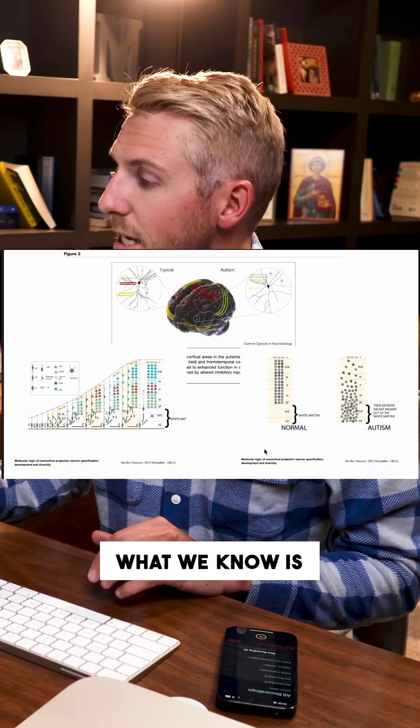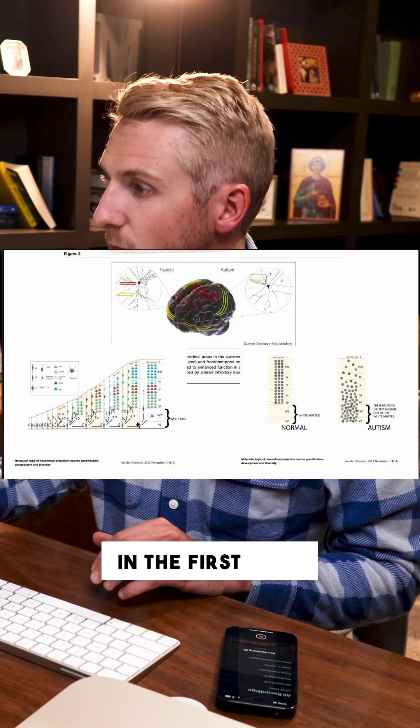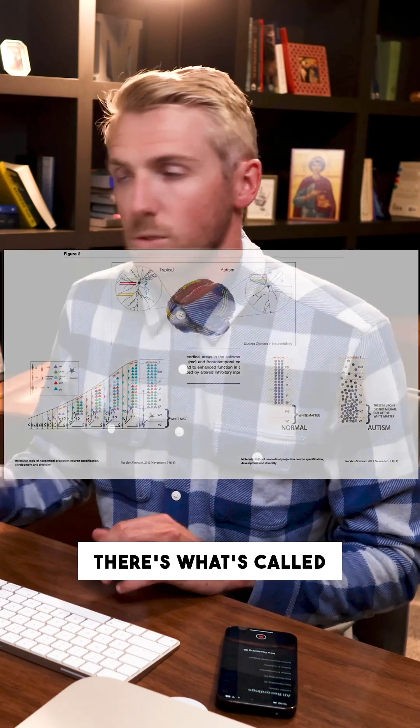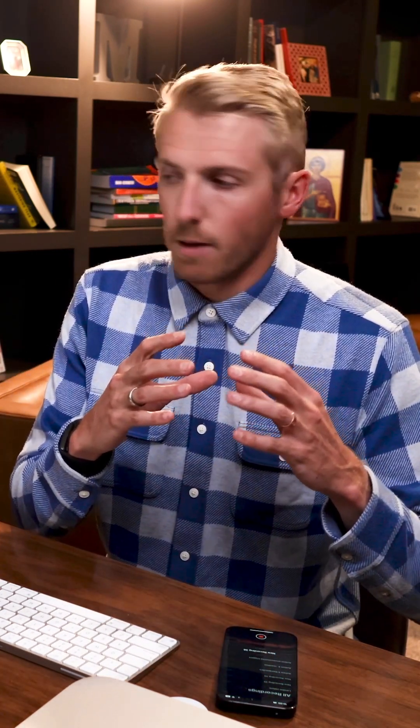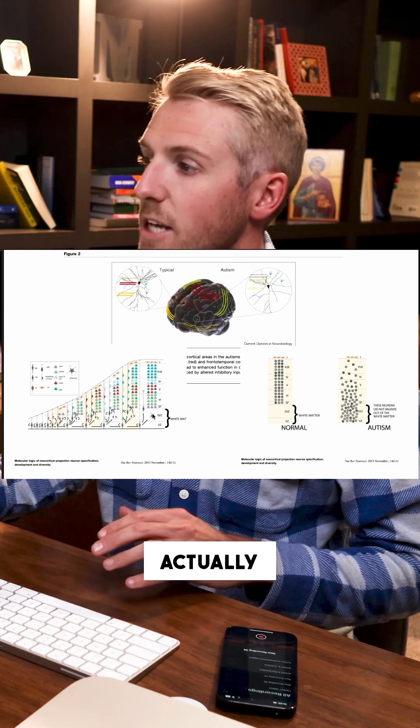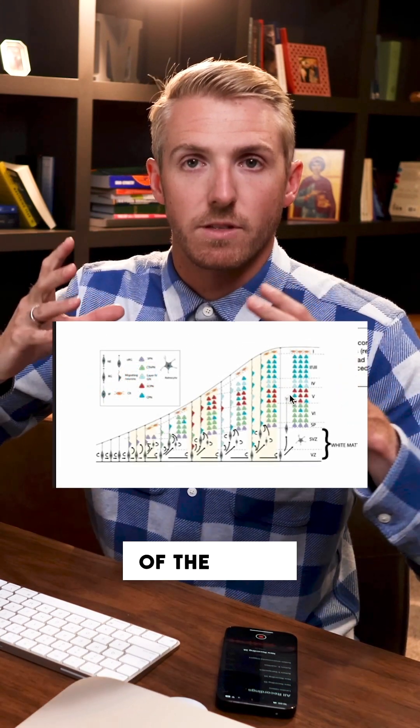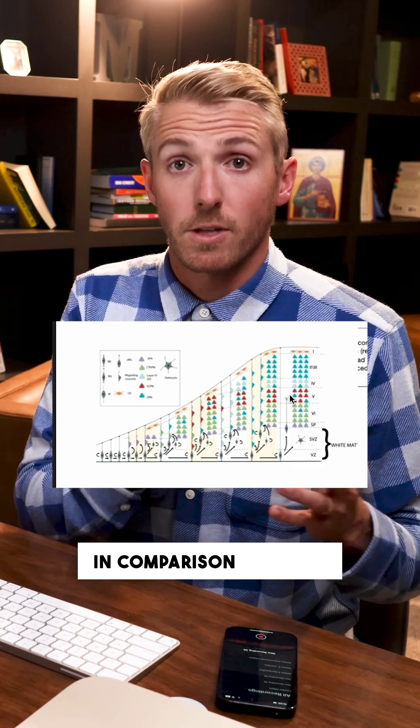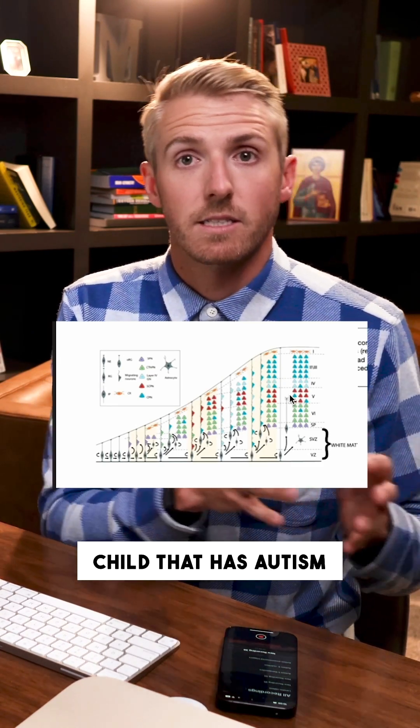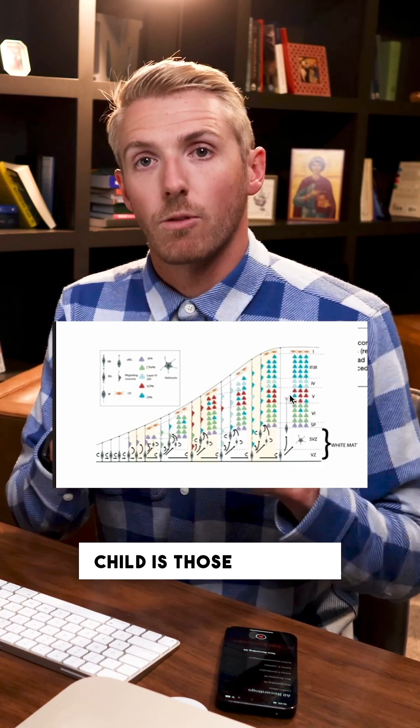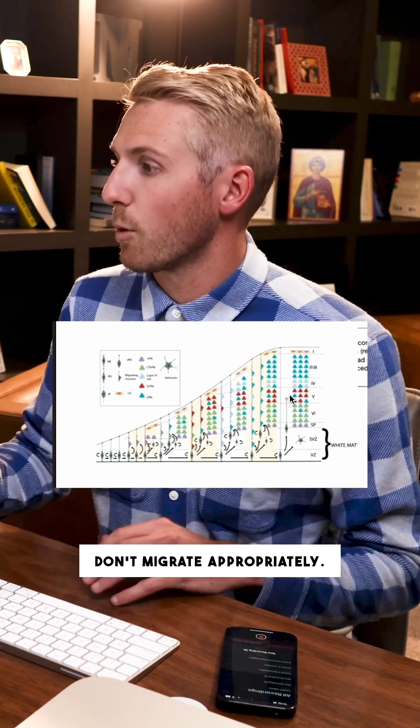So what we know is that in the first couple years of life, there's what's called a neuronal migration, where these neurons in the white matter areas are actually migrating to the higher cortex and the higher levels of the brain. And what we know in comparison between a child that has autism and a neurotypical child is those neurons don't migrate appropriately.